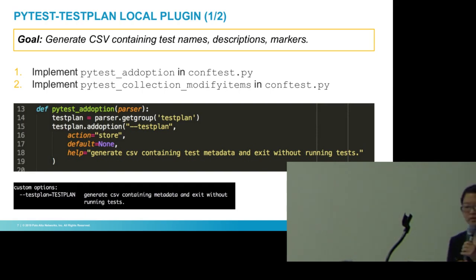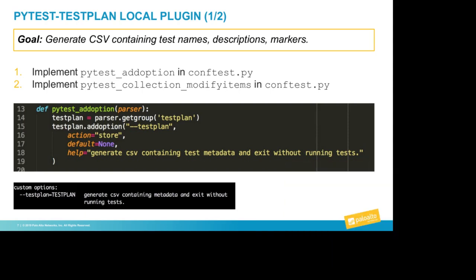I looked into the plugin writing process and found that using pytest_collection_modifyitems, I could tap in after PyTest has already collected all the tests — but before those tests run — get the information about the tests, generate the CSV report, and then exit the test session. Here's a little bit of how that looks. It's not so important line by line — what's important is just knowing that this is possible.